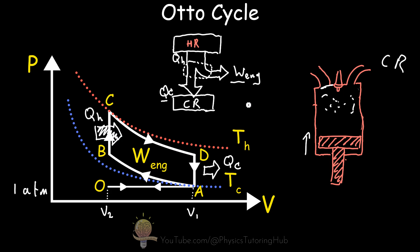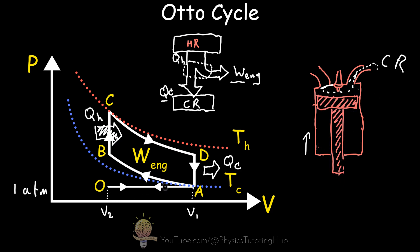The amount of work done is represented by the area within this closed cycle on the PV diagram. The final process involves pushing out the exhaust gases into the outer atmosphere and going back to state O, and then the cycle repeats. For the thermal efficiency of an idealized Otto engine, if we treat the working substance — the air and fuel mixture — as an ideal gas, we can use equations derived from the ideal gas law: PV = nRT.